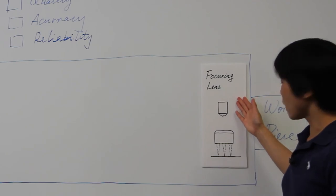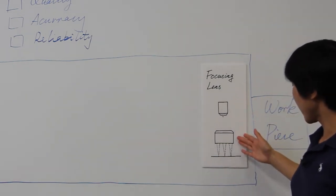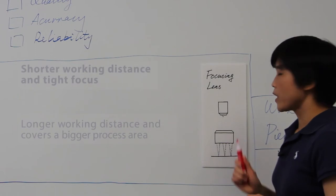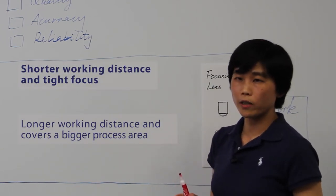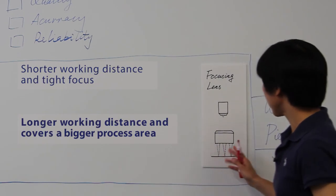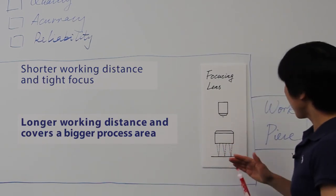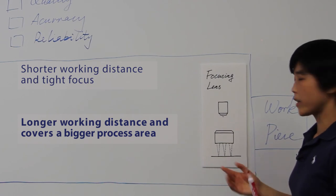Oftentimes we can choose between an objective lens or a scan lens. Objective lens tends to have a much shorter working distance and a very tight focus. While the scan lens, on the other hand, has a longer working distance and it can cover a much bigger process area.